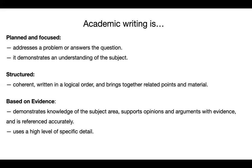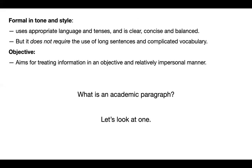Usually you should be more specific than you even realize you should be. Academic writing is also very formal in tone and style — it uses formal language, it's very clear and concise and balanced. It doesn't use slang or familiar language. It never uses words like 'you' because that's very informal. But it does not require the use of long sentences and complicated vocabulary — you might think it does, but it does not. And then finally, it's objective, meaning it aims to treat information in an objective and relatively impersonal manner, presenting information in factual terms, not personal terms.